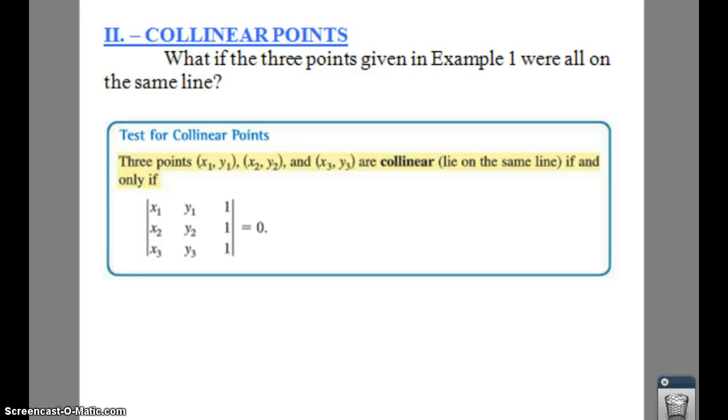We can determine if three points are collinear if we find their determinant and if it is equal to zero. However, if the determinant is not equal to zero, then they will not be collinear.